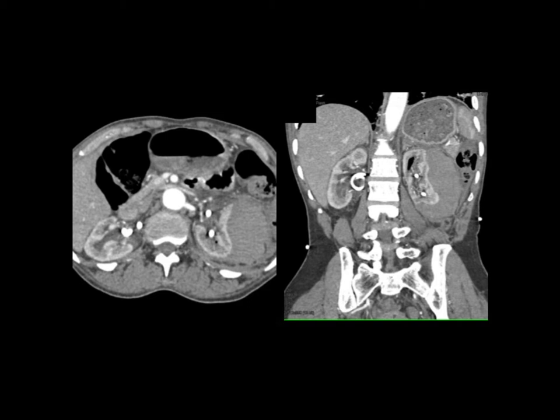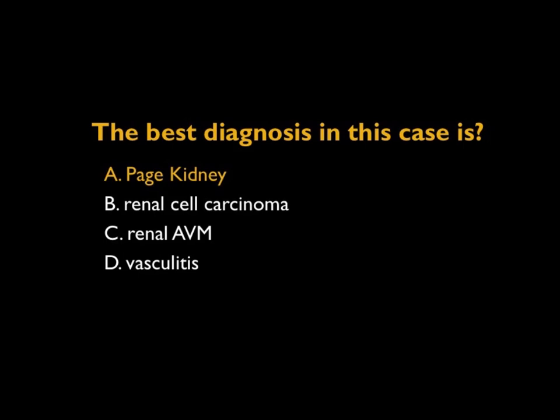Causes might be trauma — for example, placing a stent or being in an MVA. Underlying renal tumors or angiomyolipomas can bleed. Occasionally AVMs and vasculitis can bleed. But the best diagnosis here is a Page kidney — subcapsular blood compressing the kidney. I don't see a mass, vasculitis, or AVM. You need to make certain this resorbs; if not, you can develop hypertension secondary to compression over time.